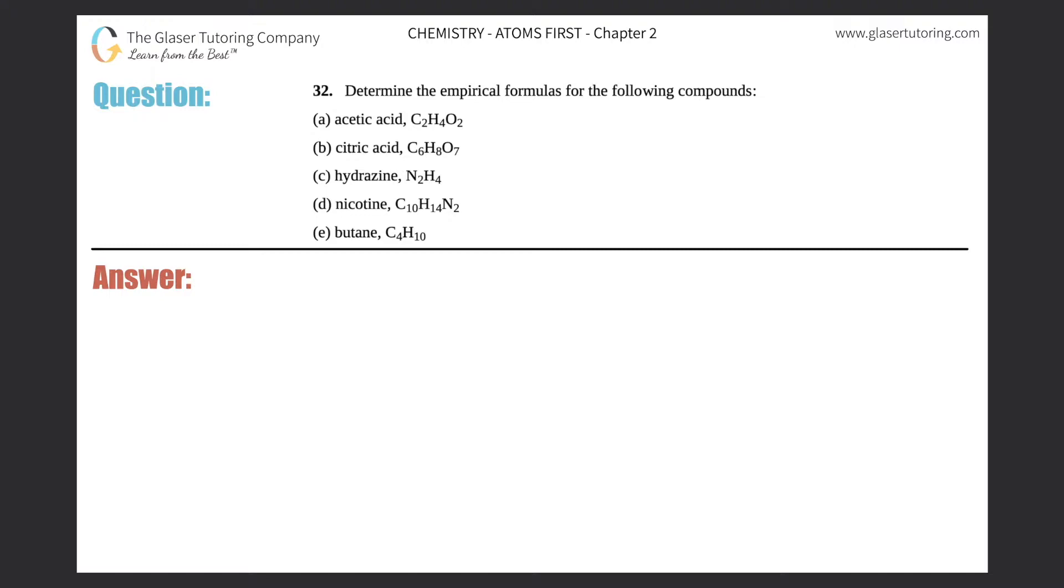Number 32: determine the empirical formulas for the following compounds. We've got (a) through (e), so I'm just going to write a, b, c, d, and e down below here.